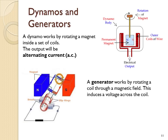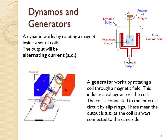A generator works by rotating a coil through a magnetic field. Here, a straight uniform field is present from north to south. The wire cuts through the magnetic field lines, and a voltage is induced across the wire. It will also be induced in the other direction in the other wire that's now moving up through the magnetic field. The coil is connected to the external circuit by a pair of slip rings, meaning that the output of the generator is alternating current, as the coil is always connected to the same side of the external circuit and the wire moves up through the field and then moves down, so the voltage will be positive and then negative.